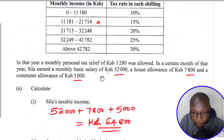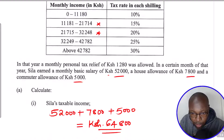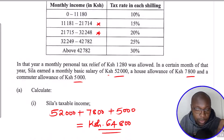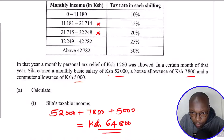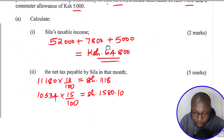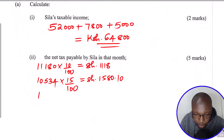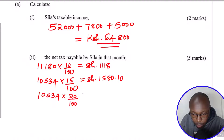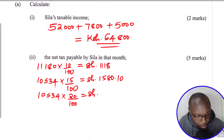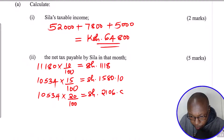For the third slab, we take 32,248 minus 21,714, which again gives 10,534 — confirming the slabs are uniform here. The rate of taxation in that slab is 20%. So 10,534 times 20% gives a tax of 2,106.80.